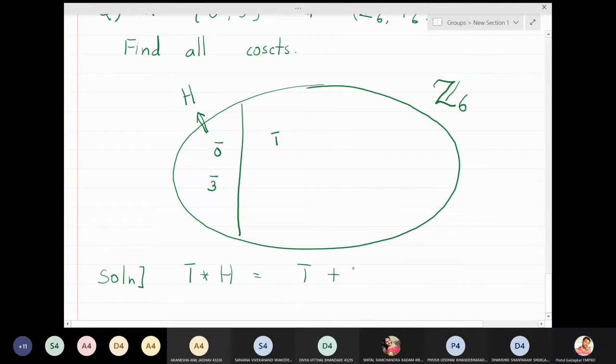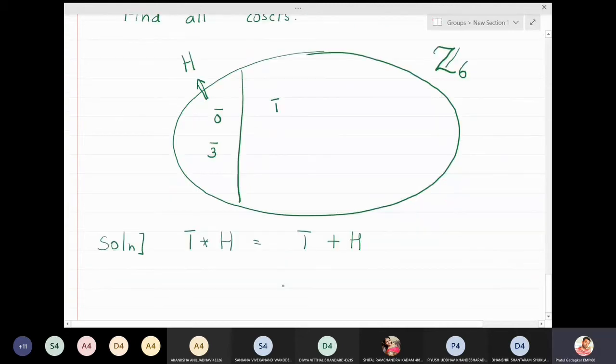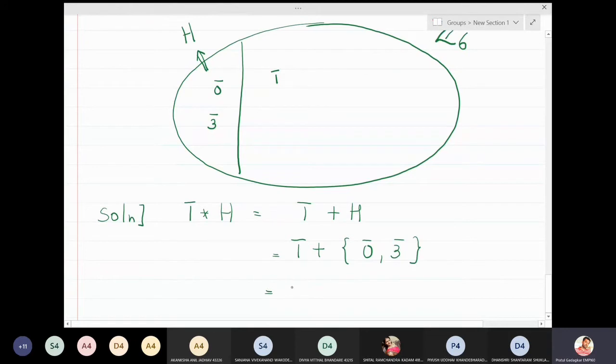So what is 1̄ + H? 1̄ + H means I'm going to add 1̄ to all the elements of H. So what is 1̄ + 0̄? 1̄ + 0̄ is 1̄. And what is 1̄ + 3̄? 1̄ + 3̄ is 4̄. So this coset 1̄ + H is containing 1̄ and 4̄.